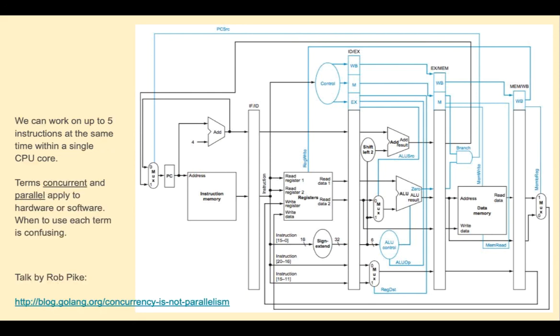We're working on up to five instructions at a time with a single CPU core. The terms concurrent and parallel apply to hardware or software. When to use each term can be really confusing. I recommend this talk by Rob Pike. He was the developer of the Go programming language. And you can Google it to find it or use this link. The name of his talk is Concurrency is Not Parallelism. It's a very engaging talk and I recommend it.